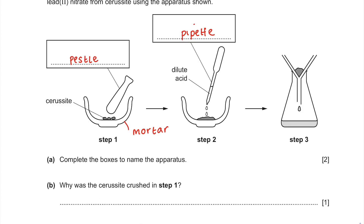Why was the cirrusite crushed in step 1? Well, if we crush it, that means we're basically increasing its surface area, because you're taking larger blobs and making them much smaller. So the answer is: to increase its surface area.